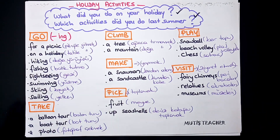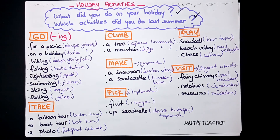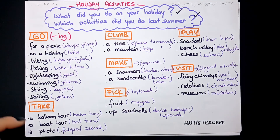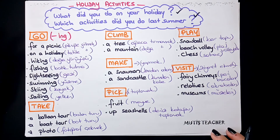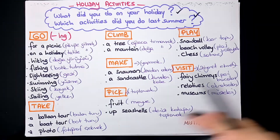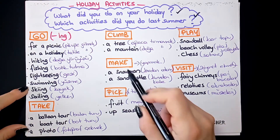Videoların altındaki açıklama kısmına bakın — sunum kağıtlarını da oraya atıyorum. Take fiiliyle: take a balloon tour, take a boat tour, take a photo (fotoğraf çekmek). Climb — tırmanmak: climb a tree (ağaca tırmanmak), climb a mountain (dağa tırmanmak). Make — yapmak: make a snowman (kardan adam yapmak), make a sandcastle (kumdan kale yapmak). Pick — toplamak: pick fruit (meyve toplamak), pick up seashells (deniz kabuğu toplamak).